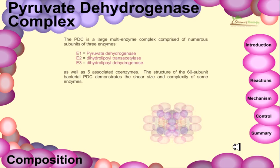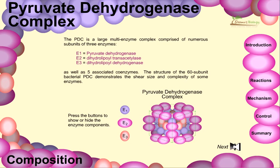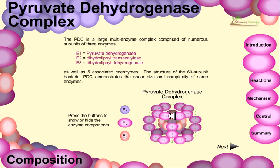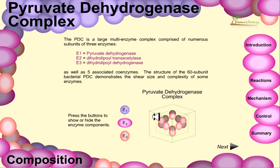The PDC is a large multi-subunit complex comprising numerous subunits of three enzymes: E1 pyruvate dehydrogenase, E2 dihydrolipoyl transacetylase, and E3 dihydrolipoyl dehydrogenase, as well as five associated coenzymes. The structure of the 60-subunit bacterial PDC demonstrates the sheer size and complexity of these enzymes. In the structure, E2 is embedded on the inside, E3 is also in the inside region, and E1 is positioned between E2 and E3.